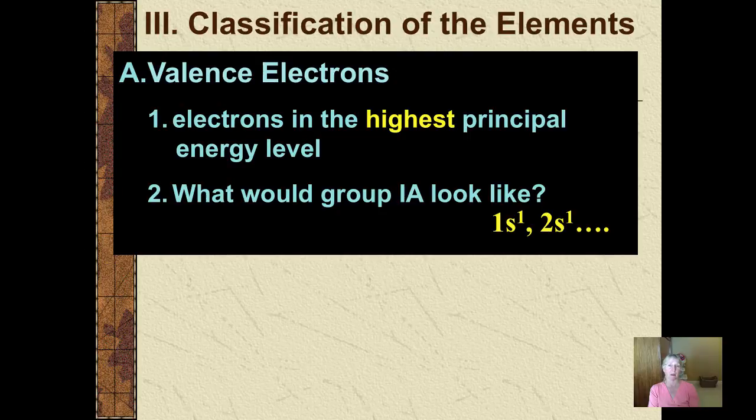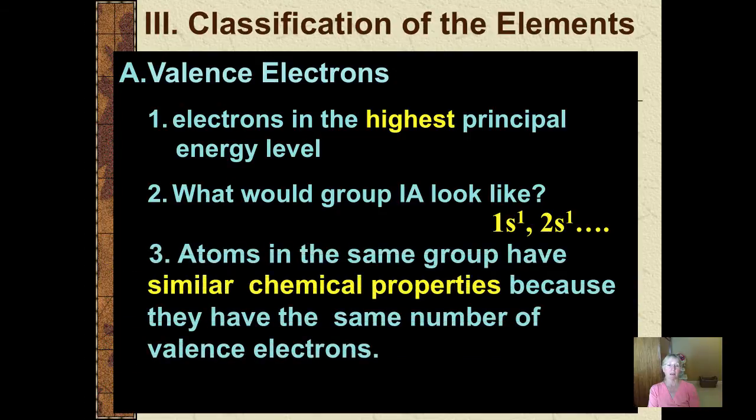And because of this, atoms in the same group, because they have the same number of valence electrons, have similar chemical properties. So all of the alkali metals, for example, that would be in Roman numeral group 1A, can have a very violent reaction with water.